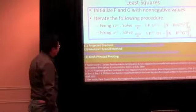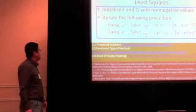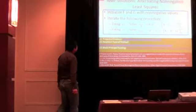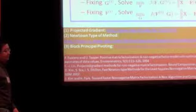Another strategy is alternating non-negative least squares. It also starts with some randomly initialized non-negative matrices, and then alternatively fixing either F or G, and then solves the other one by solving this non-negative least squares problem.